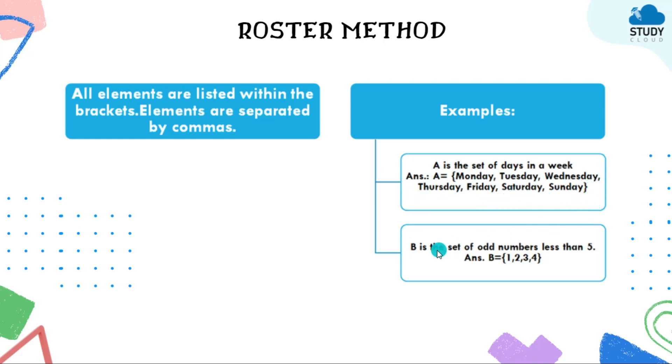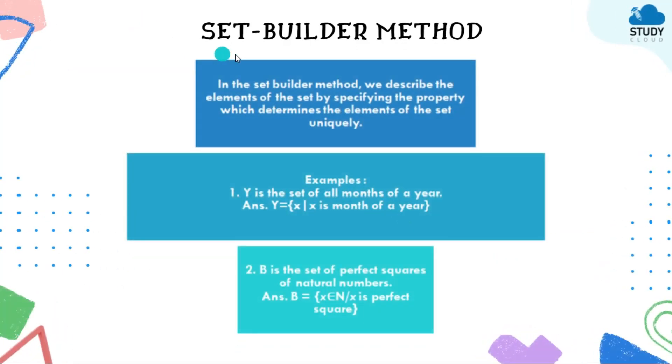One more example: B is a set of all numbers less than five. So what are all numbers less than five? Obviously one, two, three, four. So write B, the set B is equal to, open the curly brackets and write one, two, three, four. Don't forget to add the commas here - commas are quite important.